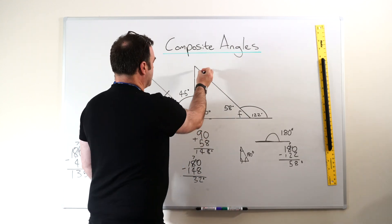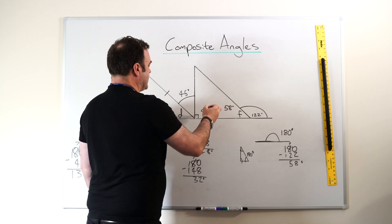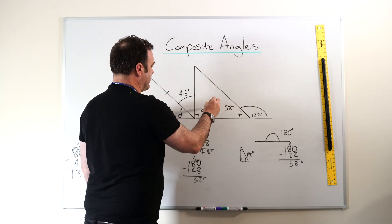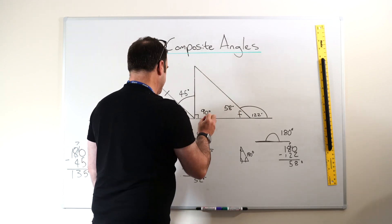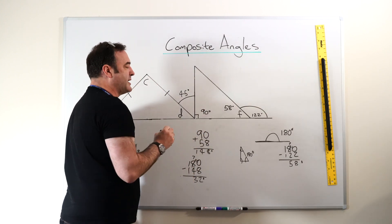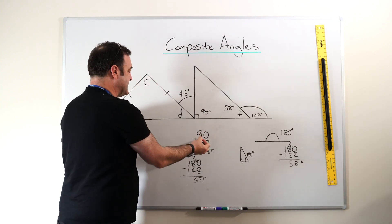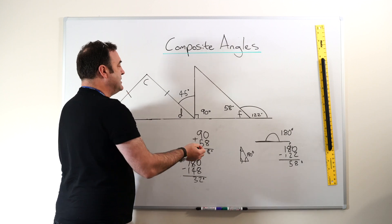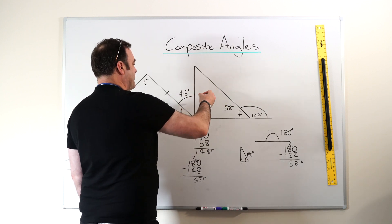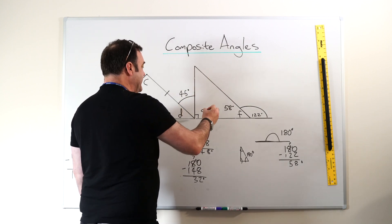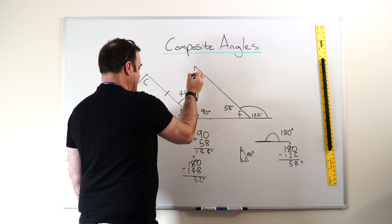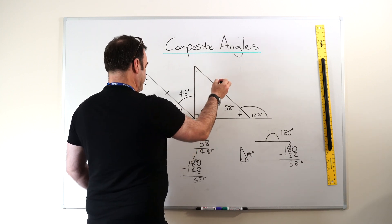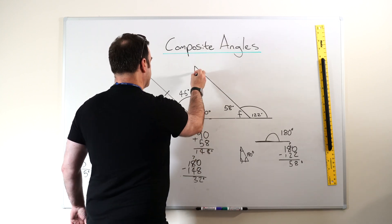We know that the total of these three angles should be 180. We've got 90 and 58. So first of all we work out what we've got: 90 plus 58 is 148. Then if we subtract that from what it should be, which is 180, we get the difference, which is 32 degrees.